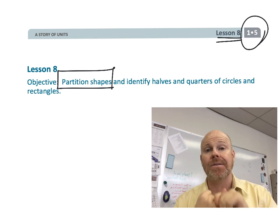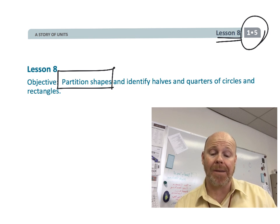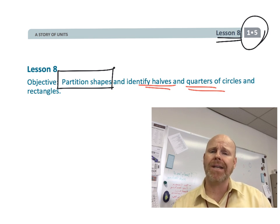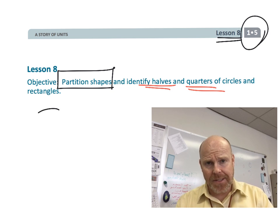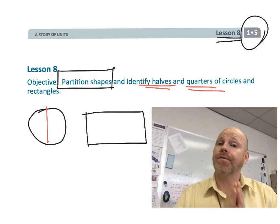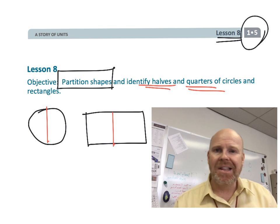Specifically, we're also going to be adding some new vocabulary. We're going to be talking about halves and quarters of circles and rectangles. Halves are things cut into two equal-sized pieces, and quarters, the whole has been cut into four equal-sized pieces. So let's get started.